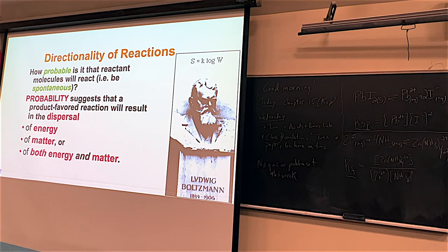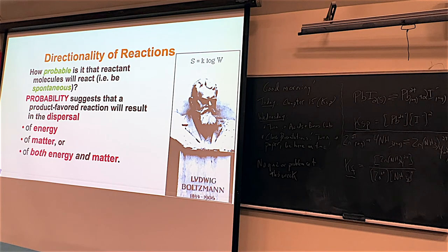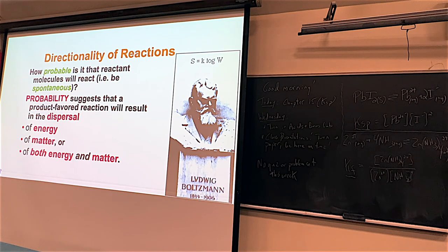Dispersal can be energy dispersal — you have something concentrated in energy and you disperse it. For example, you eat a donut and you're on that sugar high. That reaction is spontaneous. Or you can have very concentrated matter — like an explosion — where matter is dispersed over a larger area. Some reactions have dispersal of both energy and matter. If your reaction fits one of these categories, it is more likely to occur.